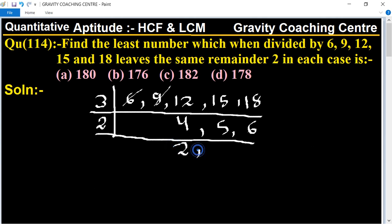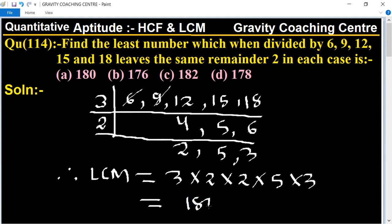Therefore LCM equals 3 × 2 × 2 × 2 × 5 × 3 equals 180.